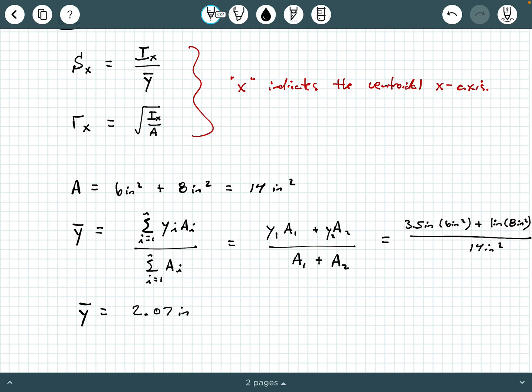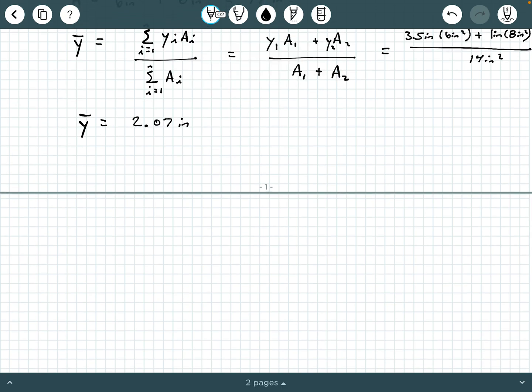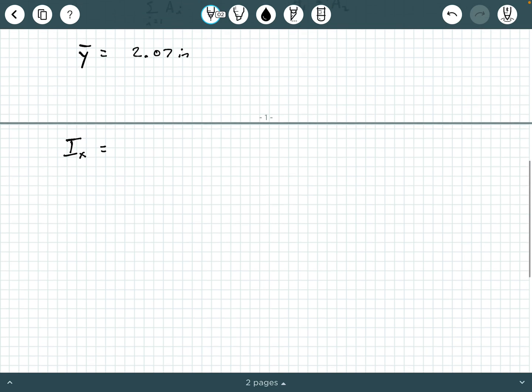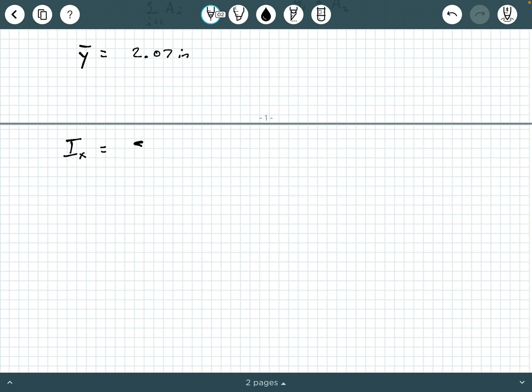So, we're making good progress here. And the next thing we need to get is the moment of inertia about the centroidal x-axis. So, that'll be what we call i sub x. And if you remember, we can build this based on the parallel axis theorem. So, our handy little formula is the summation as i goes from 1 to n of i sub x sub i plus a sub i d sub y sub i squared.